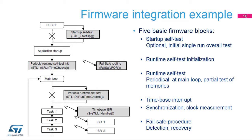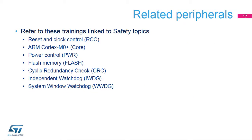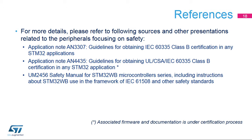Whenever a malfunction or discrepancy is found during these tests, the fail-safe routine is called. It should put the application into a safe state and determine the next recovery possibilities. Safety is spread over the full STM32WB product range. You will find a detailed description of the aforementioned features in the different peripherals chapters. For more details, please refer to the dedicated documentation and contact your local ST representatives for the availability, status, and possible delivery of the firmware and associated documentation.